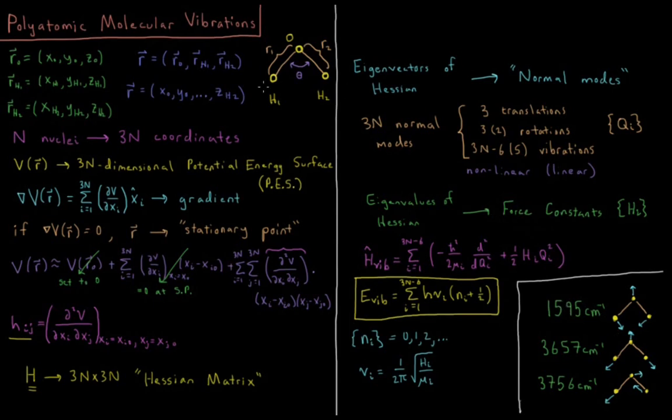So for water, we have three internal degrees of freedom, 3N minus six for a nonlinear molecule where N equals three. That's going to be three vibrations. Those three modes are the three eigenvectors of the Hessian matrix which are not translations or rotations. The first is called the symmetric stretch at 3,657 wavenumbers. You can see that hydrogens are stretching symmetrically. Another called the asymmetric stretch, where one goes out while the other decreases, R1 and R2, at 3,756 wavenumbers for that one.